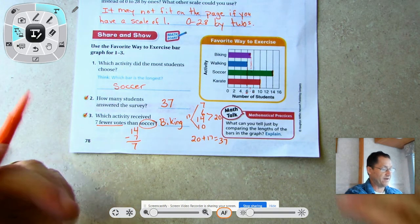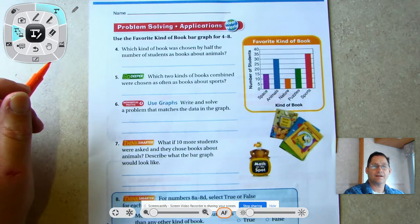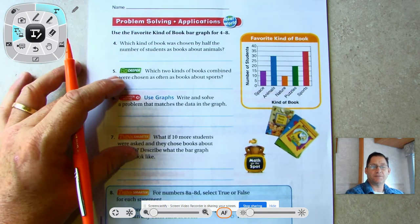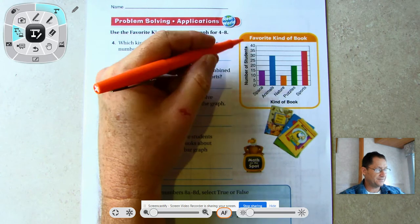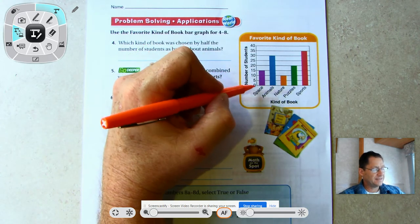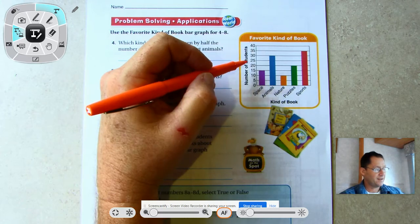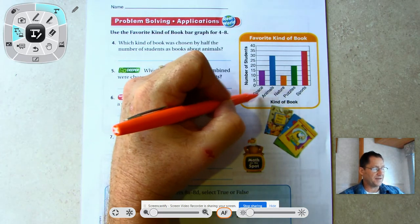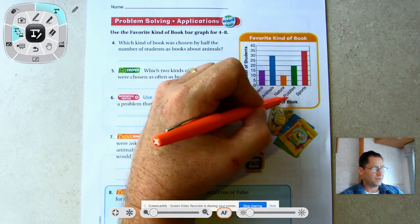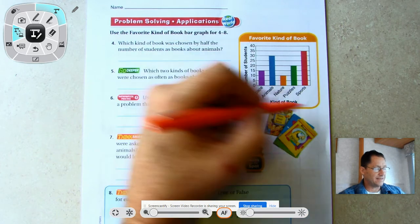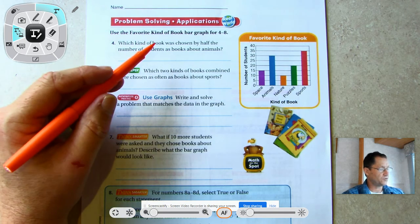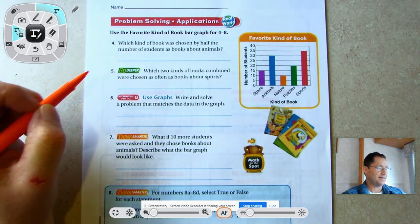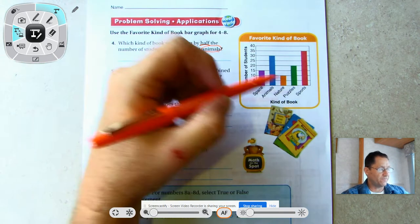Page 79 - use the favorite kind of book bar graph for numbers four through eight. The title is 'Favorite Kind of Book,' number of students is 0, 5, 10, 15 - from 0 to 40 counting by fives. We have five different books: space books, animal books, nature books, puzzle books, and sports books. Right now sports was the favorite kind of book. Which kind of book was chosen by half the number of students as books about animals?